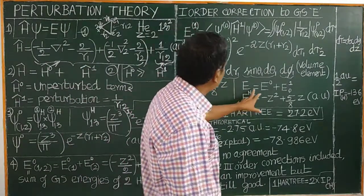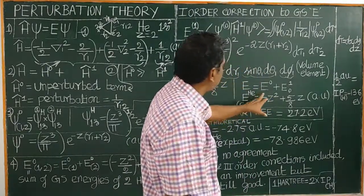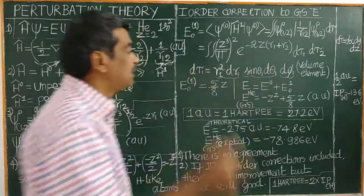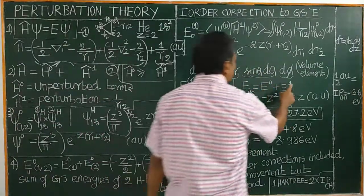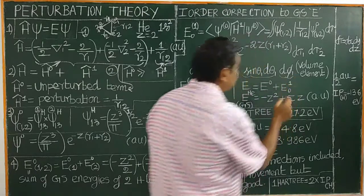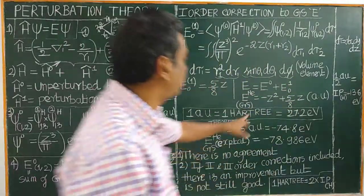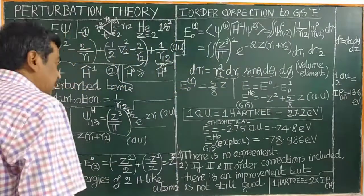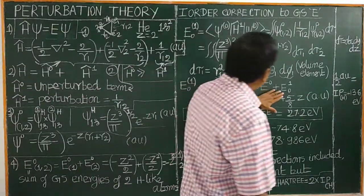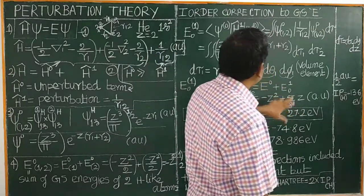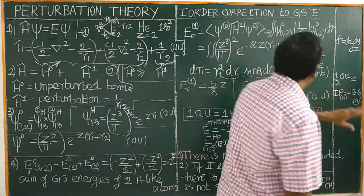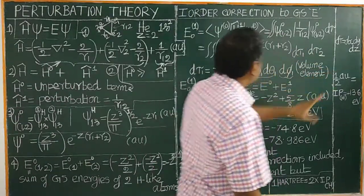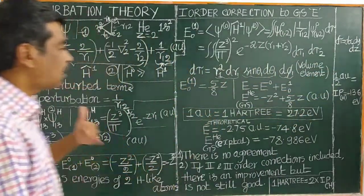The total energy of helium is equal to the sum of the unperturbed energy and the first-order perturbation energy. This is the primary result of perturbation theory applied to the helium atom, expressed in atomic units.